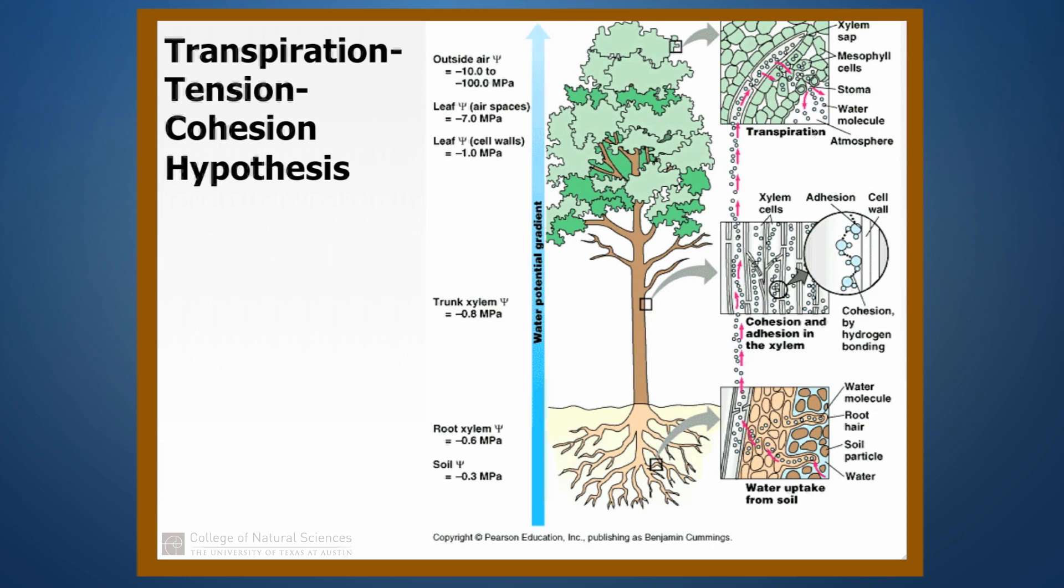So where is the energy coming from? Well, the energy is coming from the sun. The sun shining on the leaves causes the evaporation and the movement of the water out of the stomata into the open air. So the plant is basically using heat energy from the sun to drive all of the water movement in the xylem that we see.